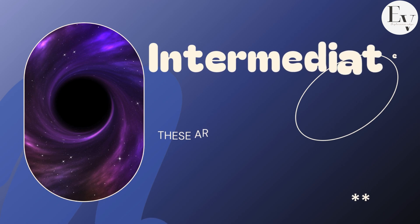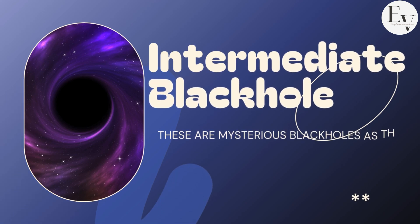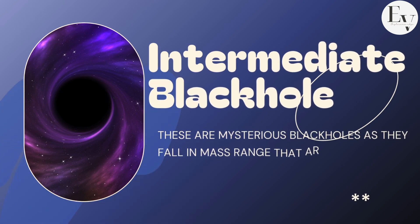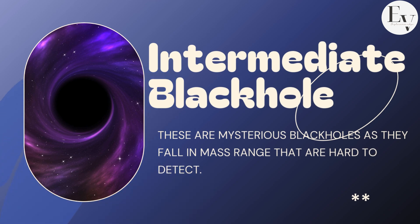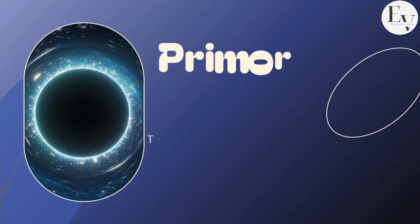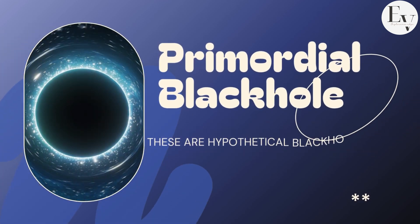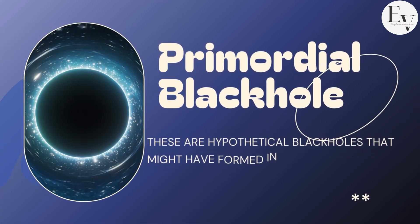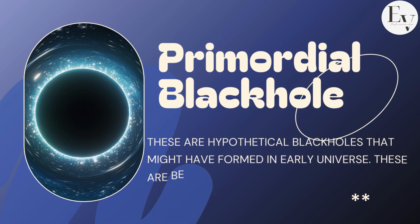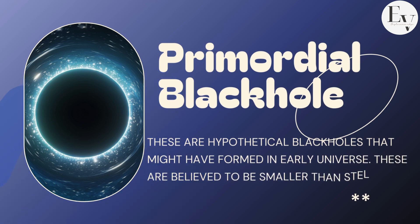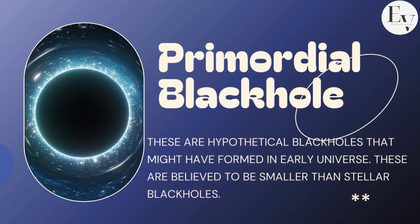The third one is the intermediate black hole, which lies between stellar and supermassive black holes. These black holes are still mysterious as they fall in a mass range that is hard to detect. And the final one is primordial black holes — hypothetical black holes that might have formed in the early universe due to high density and gravity, and are believed to be smaller than stellar black holes.